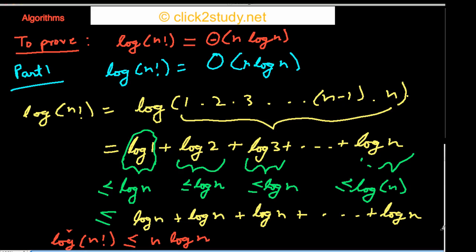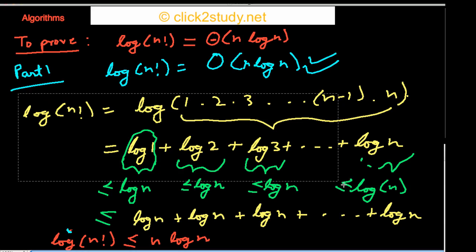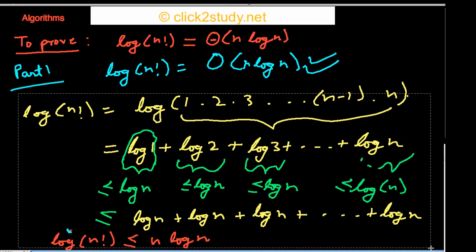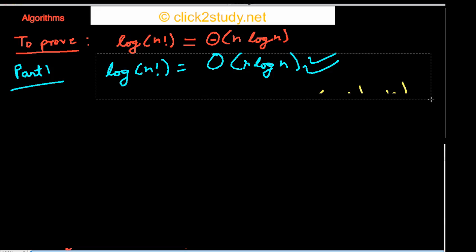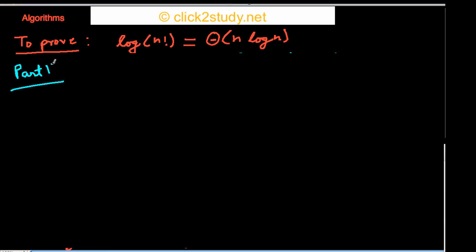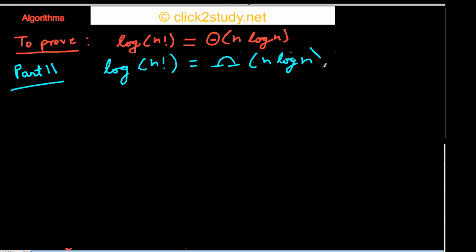Remembering the definition of big-O, the constant c here is just 1. So from this we can say we have proved that log(n!) is in O(n log n). That part is done. Now we come to Part 2, which I told you is slightly more tricky: to prove that log(n!) is in Ω(n log n).